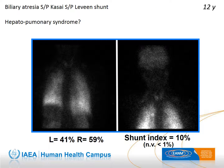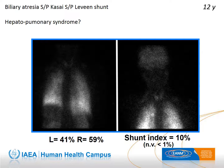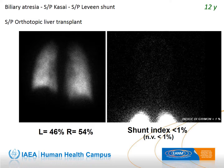This is a typical case of hepatopulmonary syndrome with an intrapulmonary right-to-left shunt secondary to liver disease. After liver transplant, the shunt disappears.